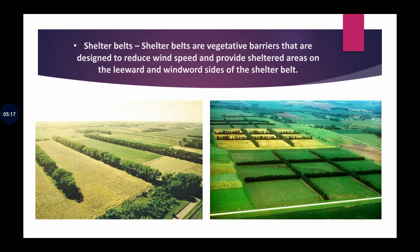Next is shelter belts. In shelter belts, we plant trees on the border of farmland. Hamara ek farmland hai jahan par hum kuch bhi planting kar rahe hain. Toh iske charo taraf border ke roop mein hum ped laga dete hain. Ye jo trees hain, ye hawa ke pressure ko reduce kar dete hain. Agar tez hawa chalti hai toh mitti ko apne saath uda ke le jaati hai, lekin agar charo taraf ped honge toh uske pressure ko kam kar dete hain, jis se mitti tezi se erode nahi ho sakti. Aur is tarah se soil ko conserve kiya ja sakta hai.